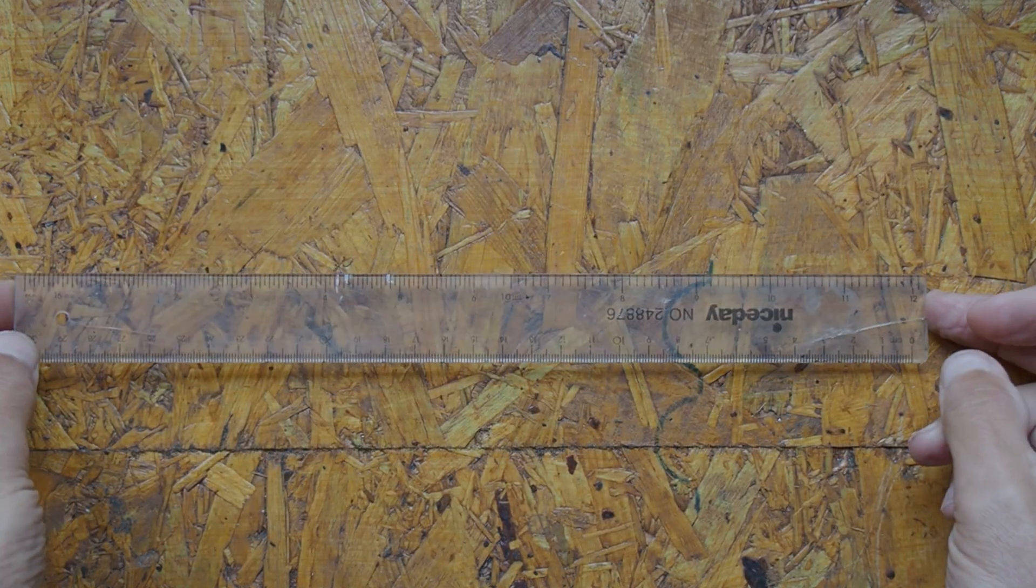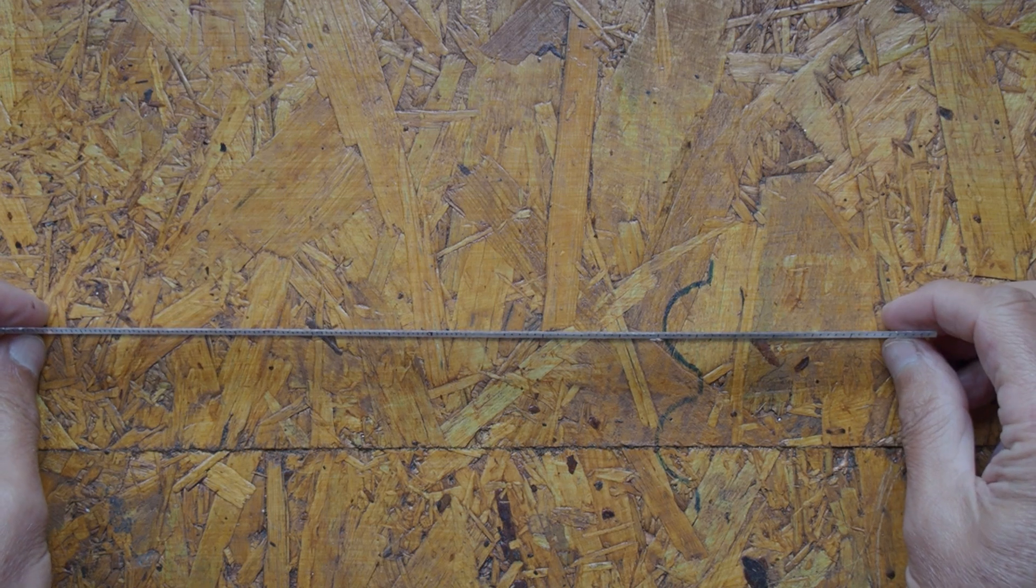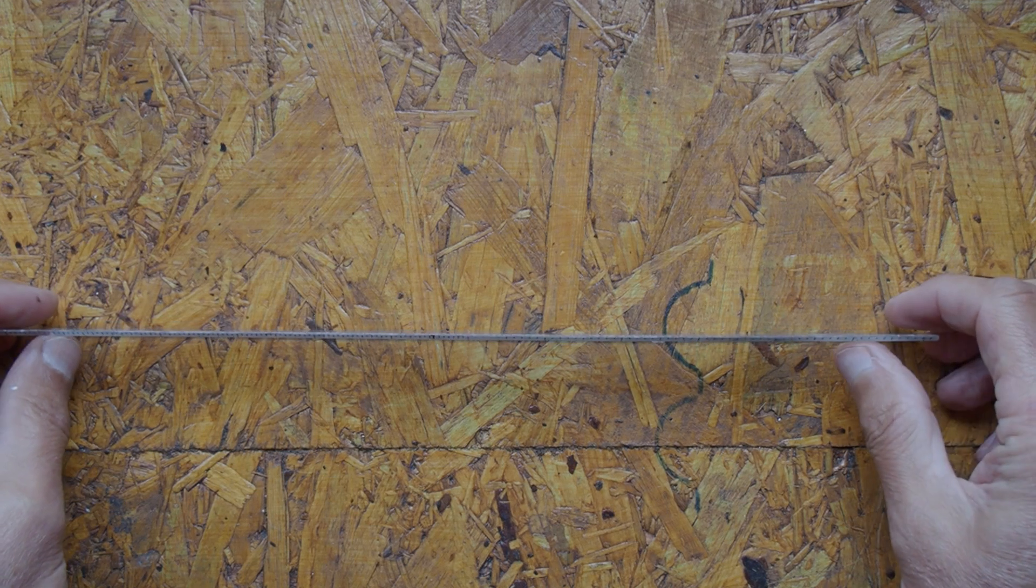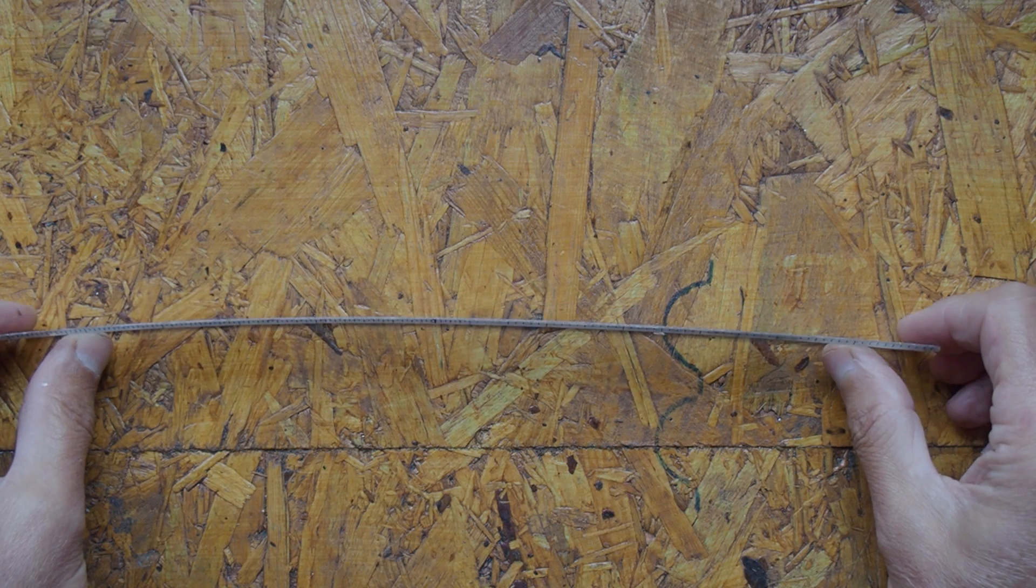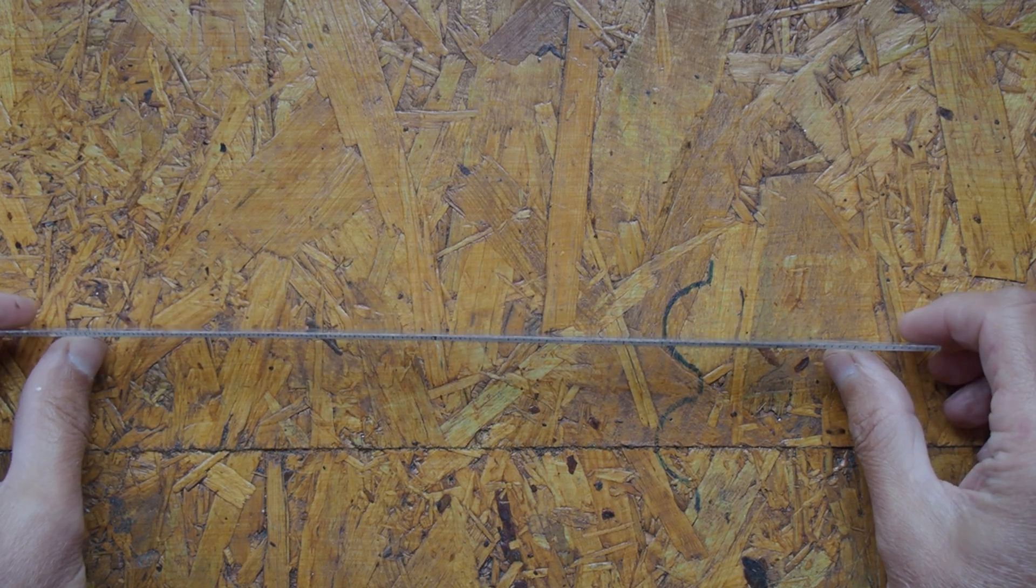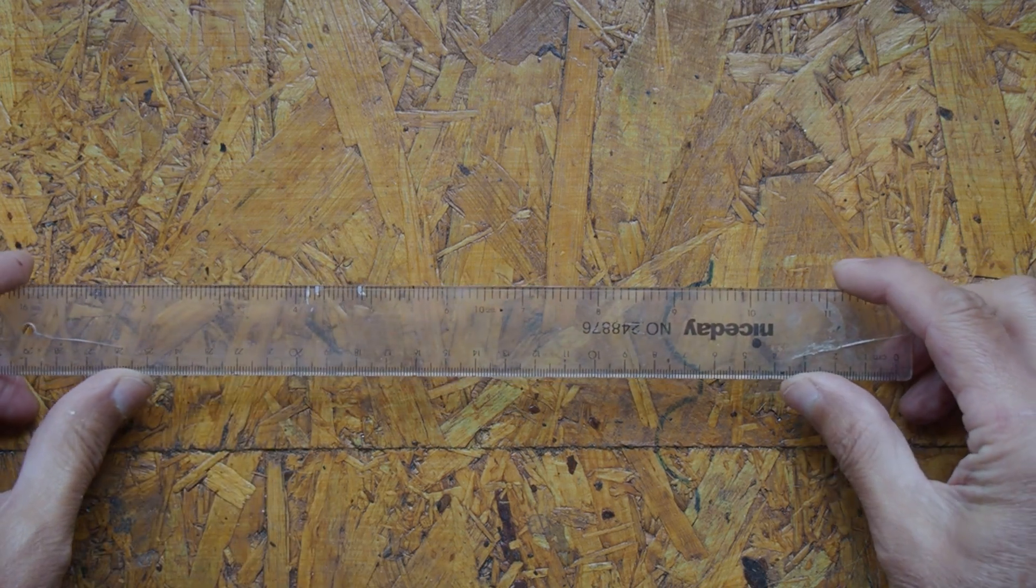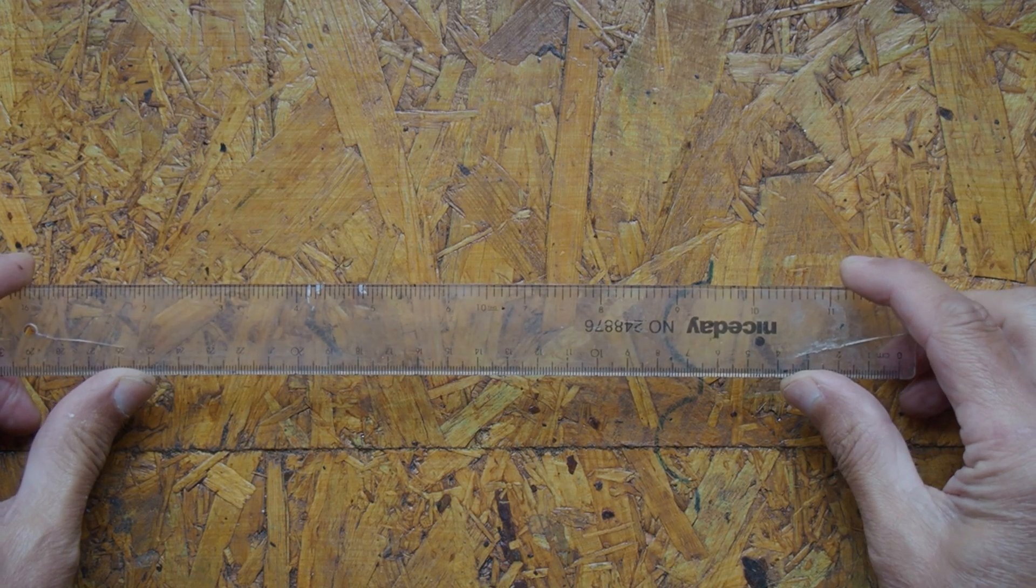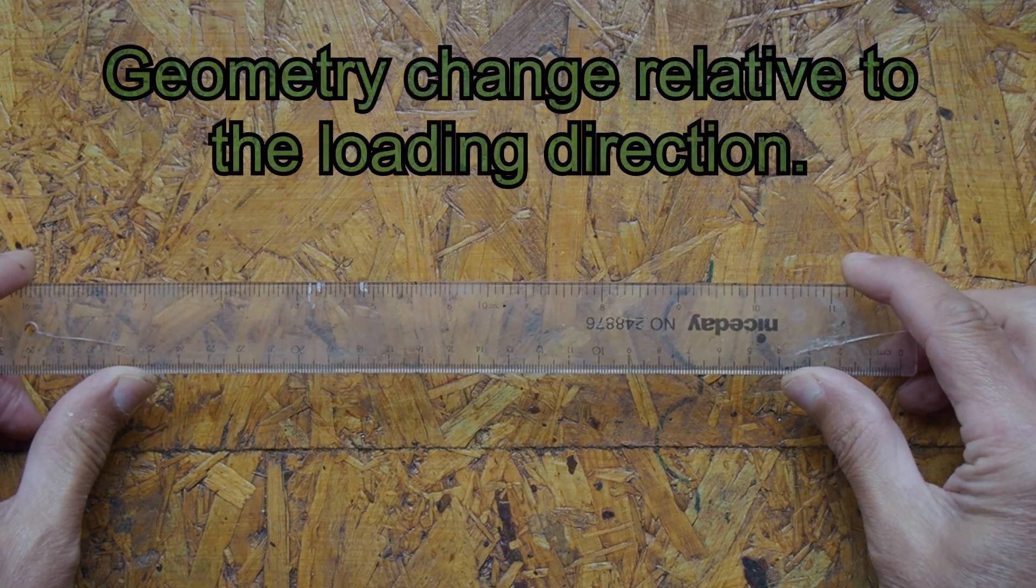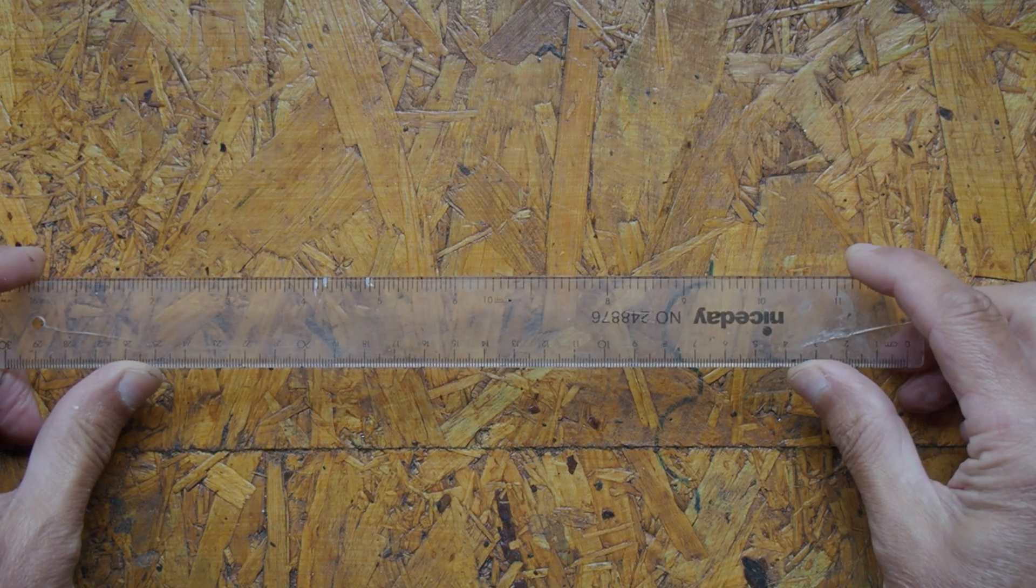Let's move on to the geometry aspect. I can demonstrate again with this plastic rule. If I bend it across the thin direction it has a low stiffness, or it's very bendy. However, if I take the same rule and turn it through 90 degrees and then try to bend it, it's very stiff. It's the same material, but the geometry has changed and therefore the stiffness has changed.